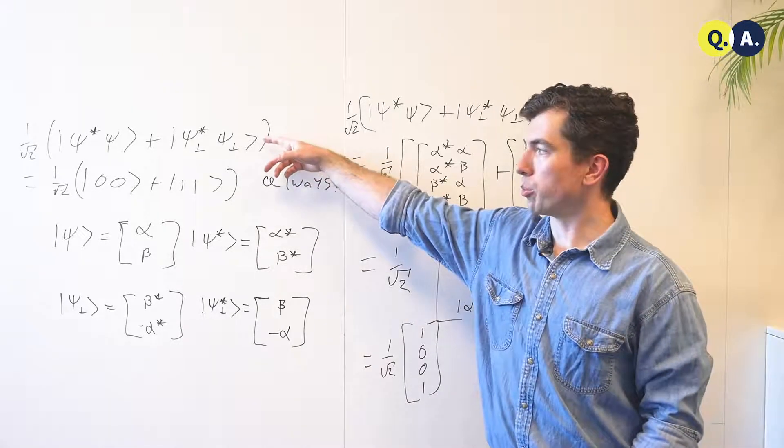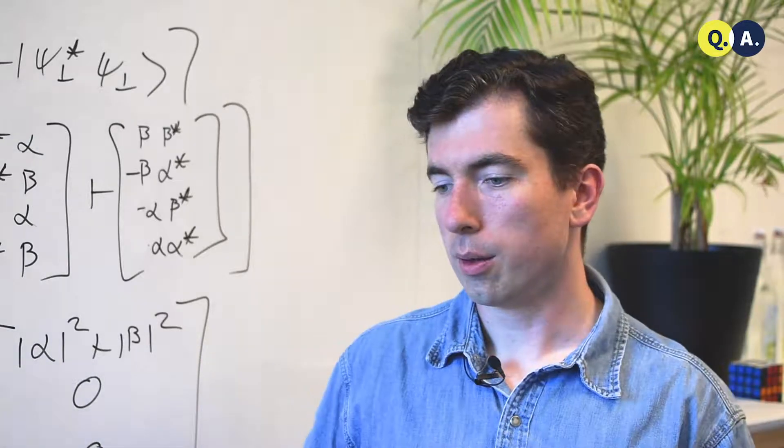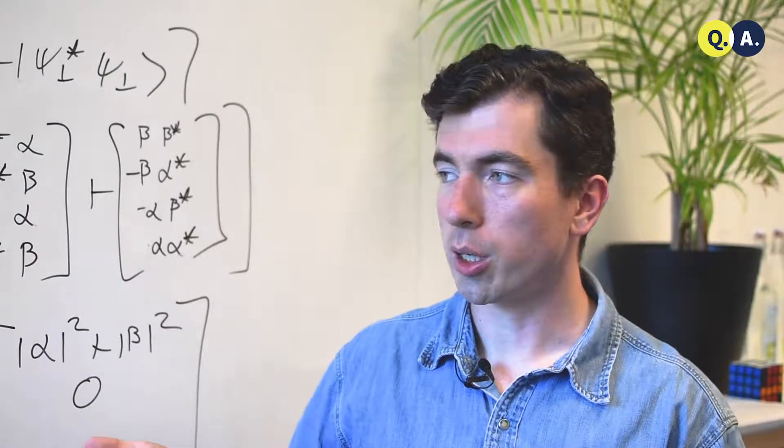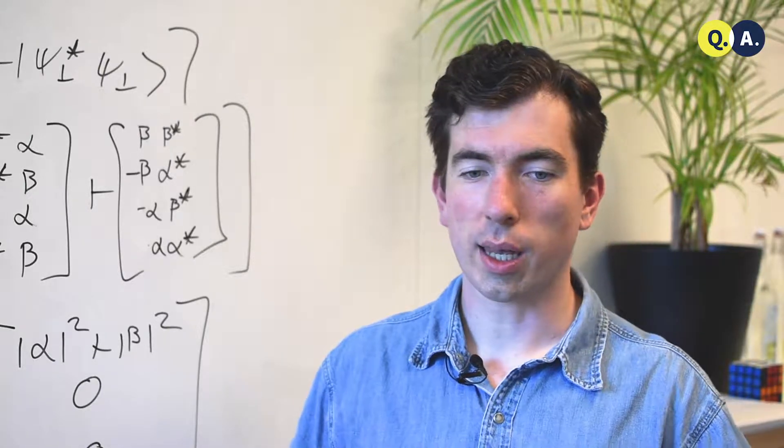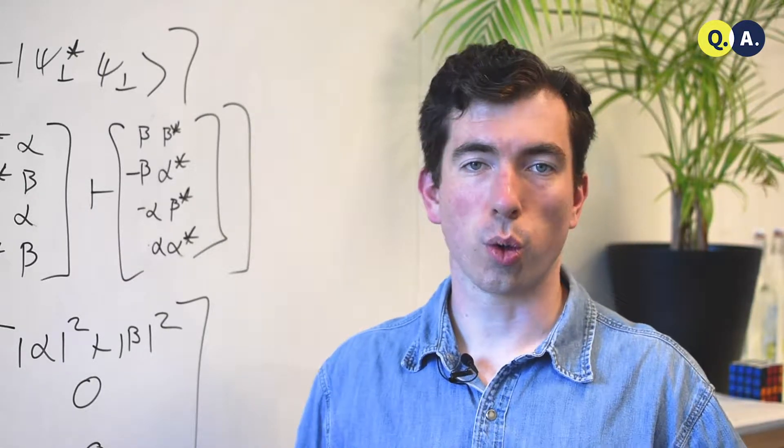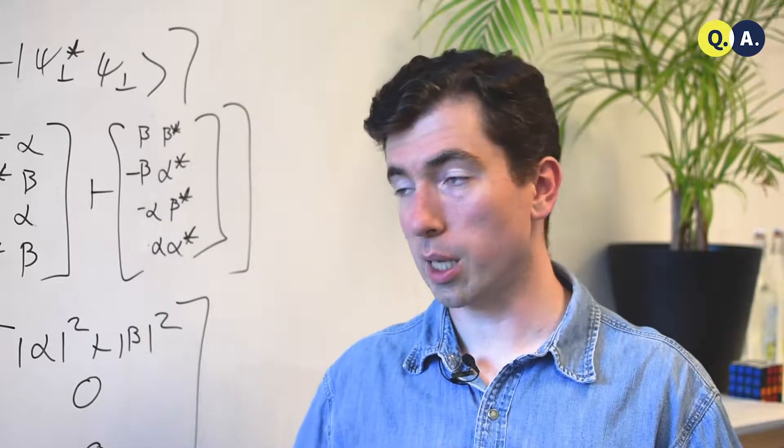This implies, for example, that if Alice and Bob share a bell state, and Alice measures out in the 0, 1 basis, she can get a state 0 or 1, and she can tell that Bob has the same state.